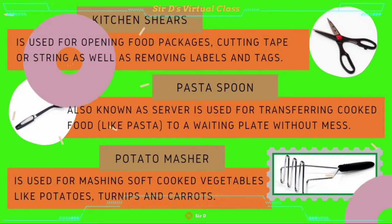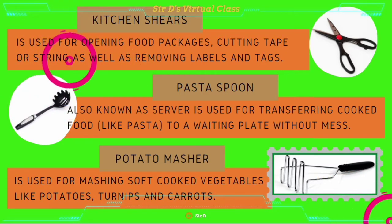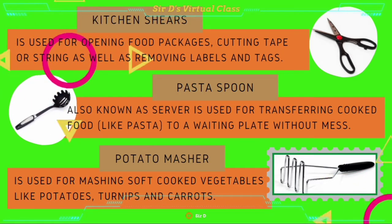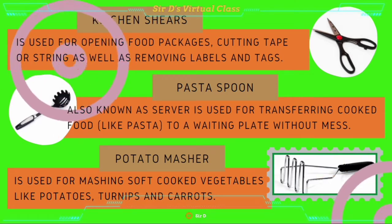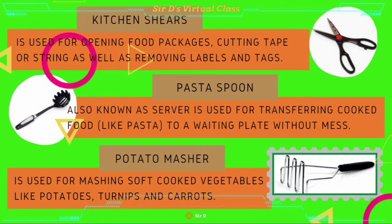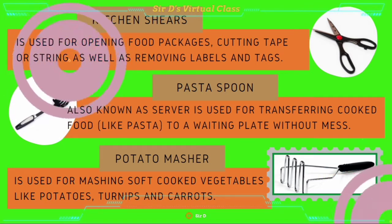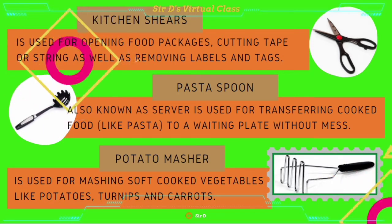Kitchen shears is used for opening food packages, cutting tape or string, as well as removing labels and tags. Pasta spoon, also known as server, is used for transferring cooked pasta to a waiting plate without mess. Potato masher is used for mashing soft cooked vegetables, like potatoes, turnips, and carrots.